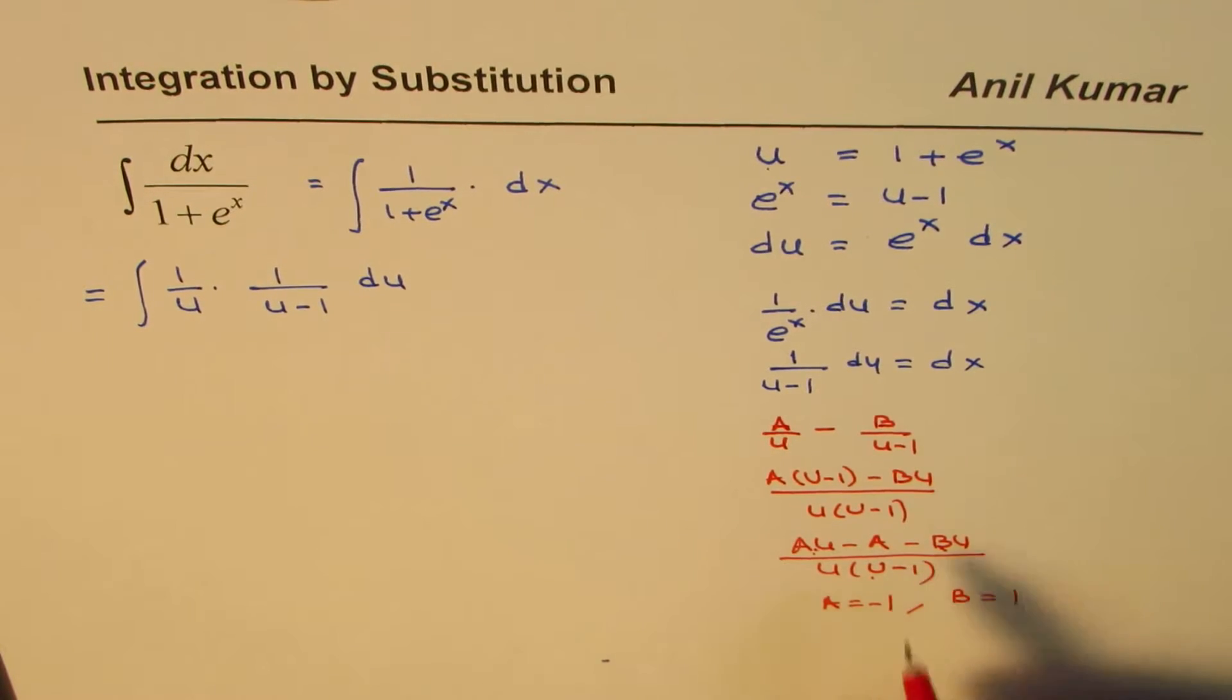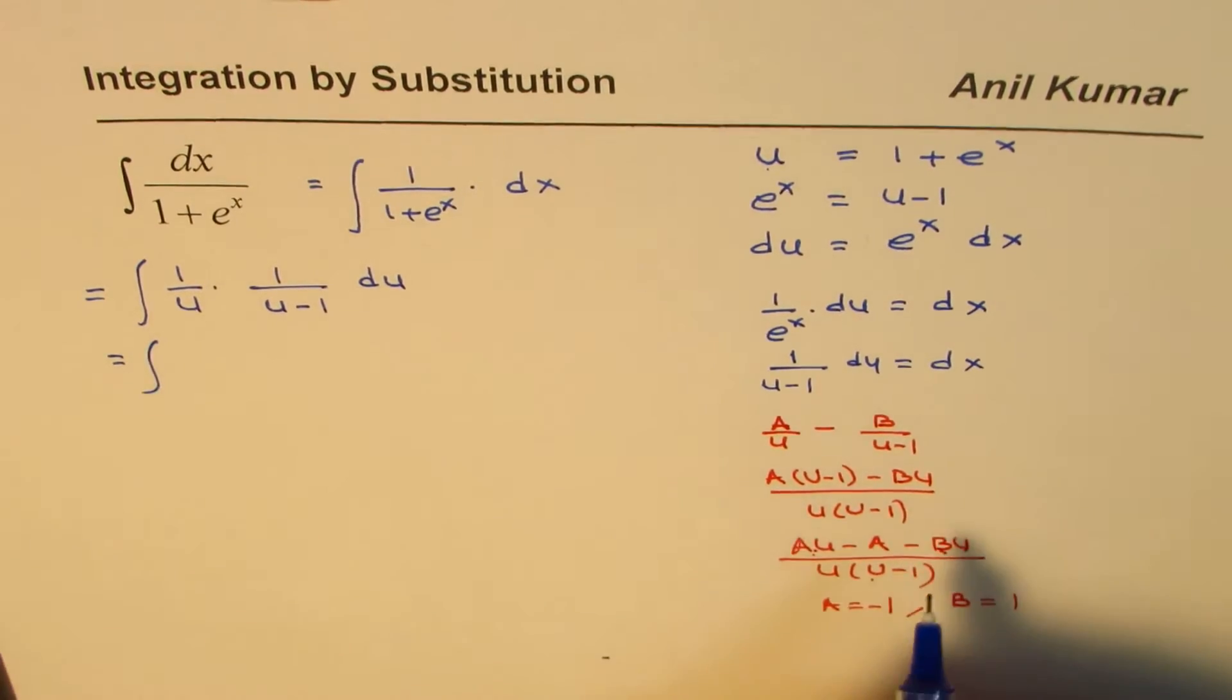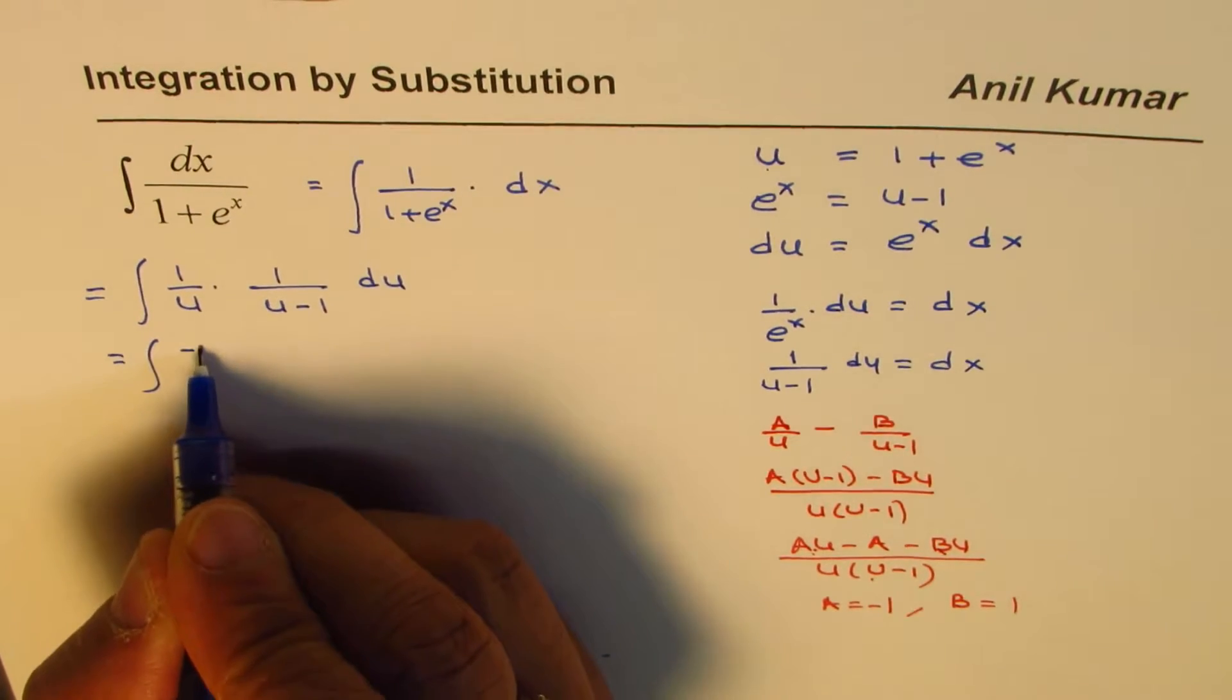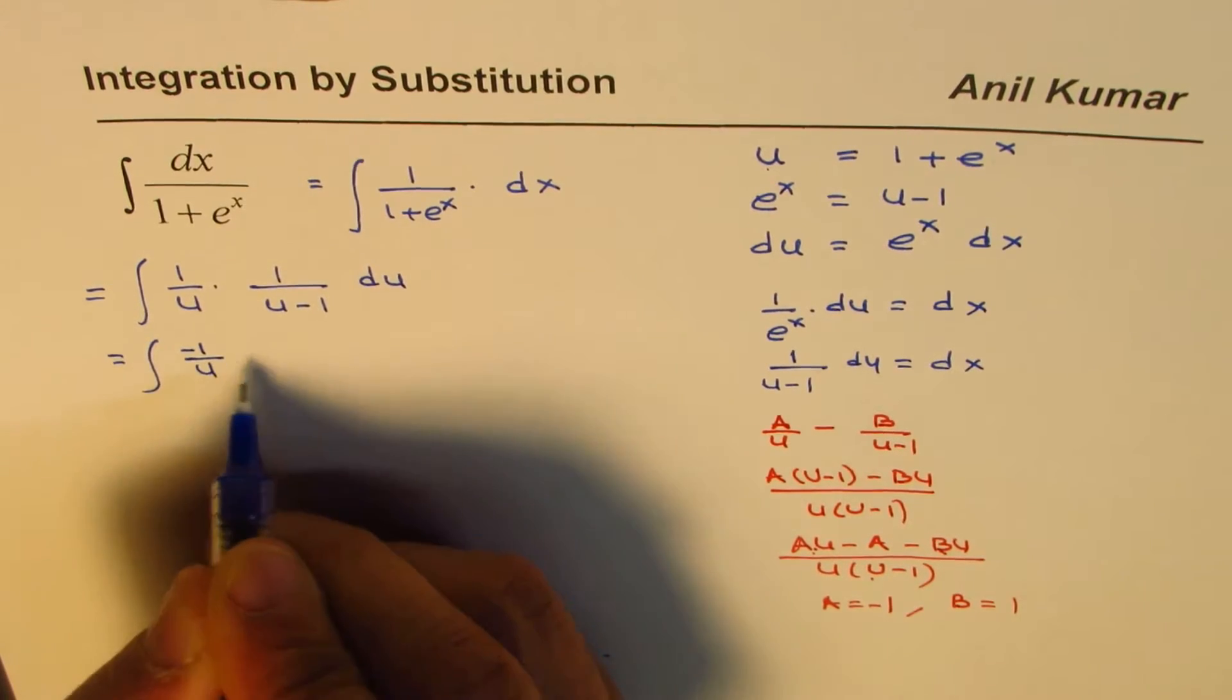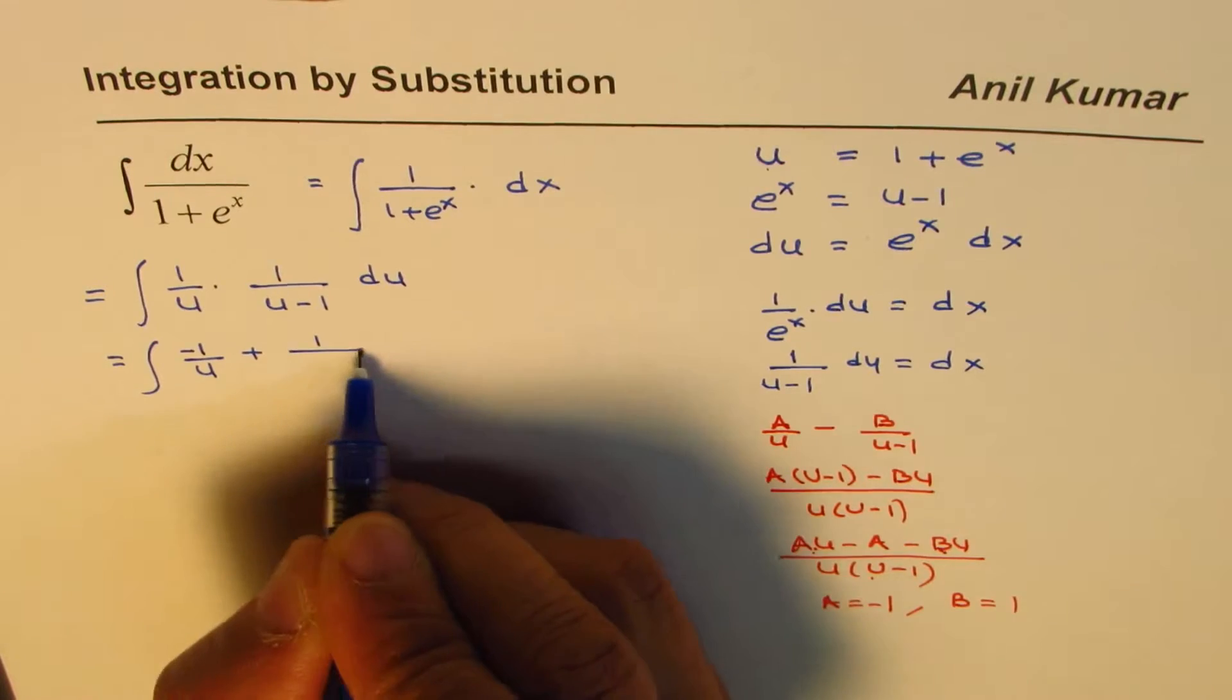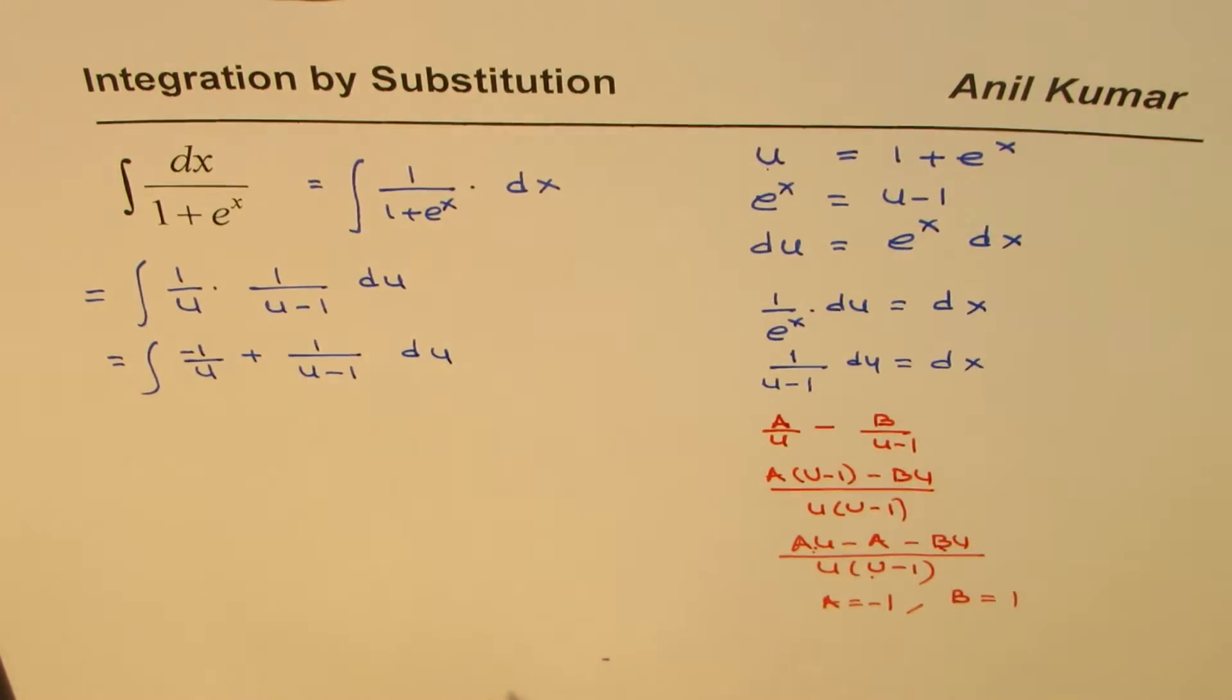So that helps to figure this out. So once we have figured this out, we could write this as integral of a over u, and a is minus 1, so it'll be minus 1 over u. B is plus 1, so it is plus 1 over u minus 1 du.